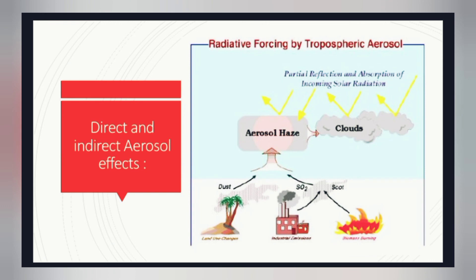You can see the diagram here showing partial reflection and absorption of incoming solar radiation. Human activities like biomass burning, industrial emissions, and land use changes release sulfur dioxide, dust, and soot. These create aerosols in the environment, which then lead to cloud formation and produce either absorption or reflection effects on climate.